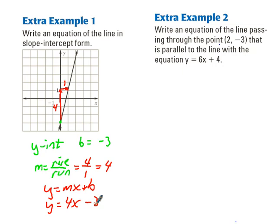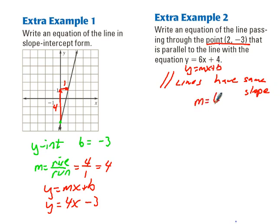Let's look at the next example. Write an equation of the line passing through the point (2, -3). We've got a point, that's helpful, that is parallel to the line with the equation y = 6x + 4. So if you recall from the day before, parallel lines have the same slope. So if we look at this equation, there's our slope-intercept form. We can see that the slope is 6 in that equation, and because we're looking for the slope of a parallel line, it will be the same slope. So now we have a slope and we have a point.